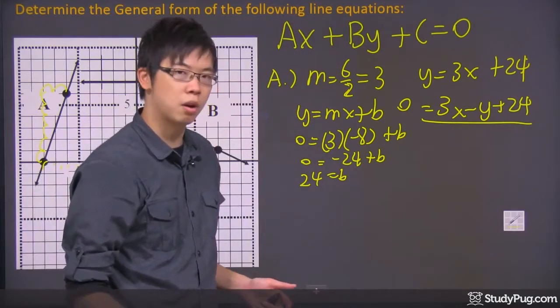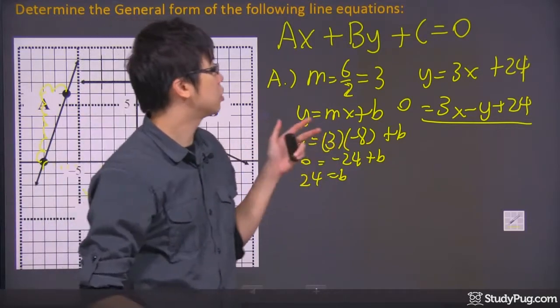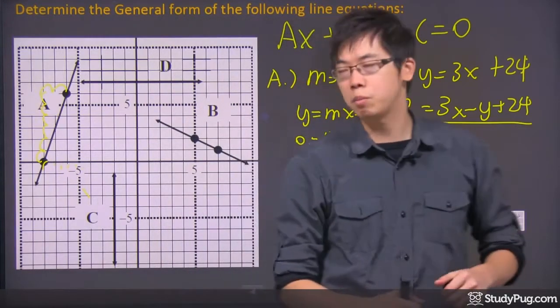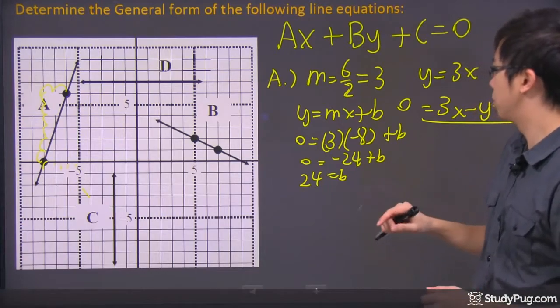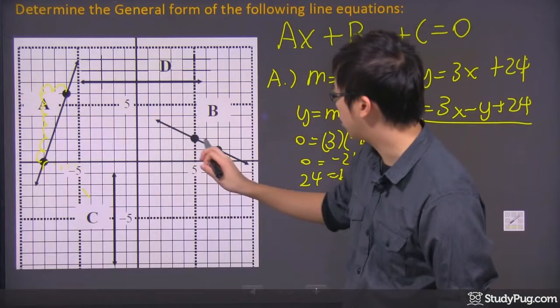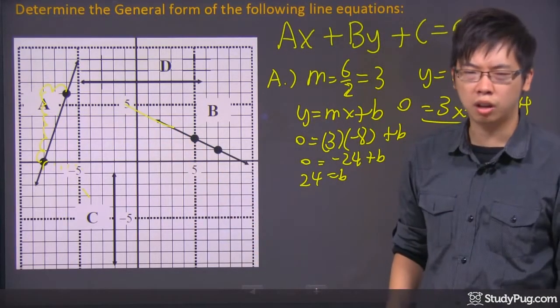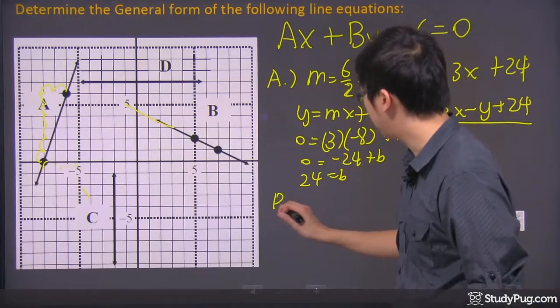Does that make sense? Pretty straightforward, right? You found the equation first, and then you just switch it around, then you get yourself a beautiful general equation. So that's line number A. So what about B? B looks like—I'm not really sure what the Y-intercept is, but if I kind of just follow this line here, I think it's a fraction rather than like a perfect number.